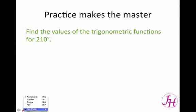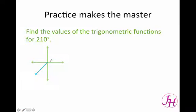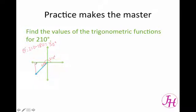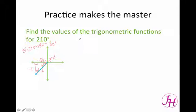Using reference angles, let's take a look at how we can find the values of the trig functions. This is 210 degrees. Remember, we're in the third quadrant. So theta prime is going to equal 210 minus 180, and that gives us 30 degrees. So this angle right here is 30 degrees. If we make our right triangle, this has to be 60. And remember, in our typical 30-60-90, across from the 30 degree angle is a 1, but we're in the third quadrant so it's negative. Across from the 60 degree angle is a square root of 3, but because we're in the third quadrant it's negative. And the hypotenuse is 2. So now we can do our trig functions.